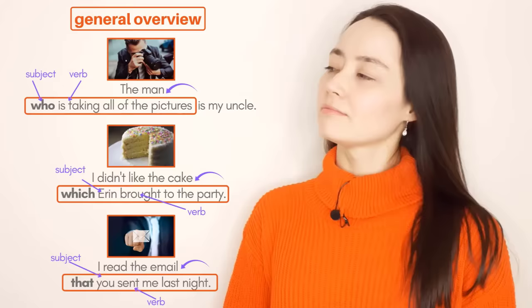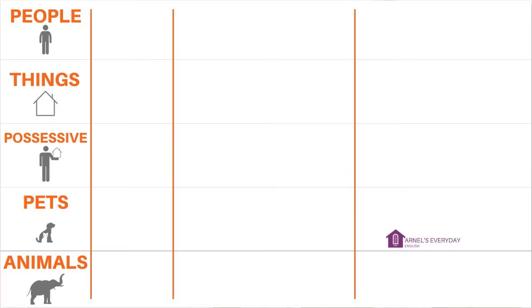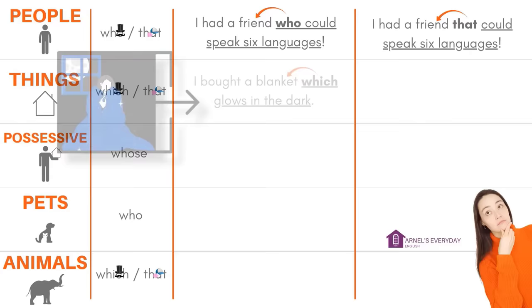How do I know when to use who, which, that, or whose? I think we need a chart. That is always less formal and more common in spoken English; which is slightly more formal. I had a friend who could speak six languages. I had a friend that could speak six languages. I bought a blanket which glows in the dark. I bought a blanket that glows in the dark.